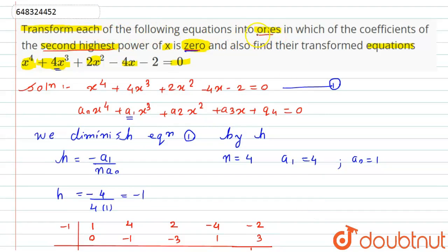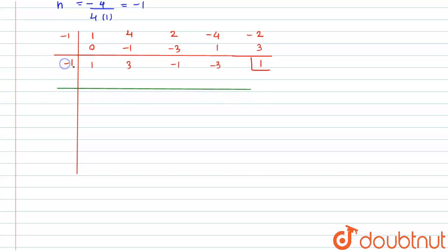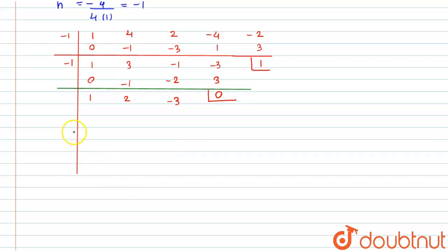We have to transform into ones, meaning we continue until we get 0 as the remainder. Carrying out the algorithm again with factor −1: bring down 1; 1 × (−1) = −1, and 3 + (−1) = 2; 2 × (−1) = −2, and −1 + (−2) = −3; (−3) × (−1) = 3, and −3 + 3 = 0.